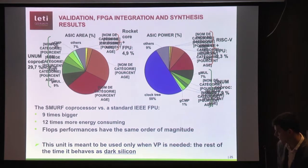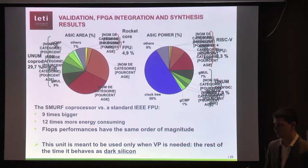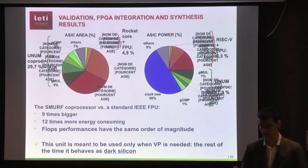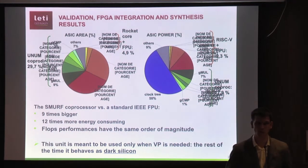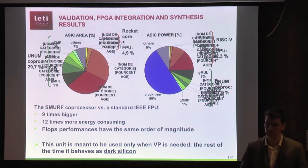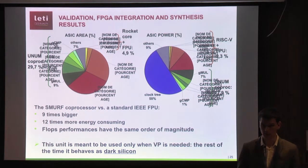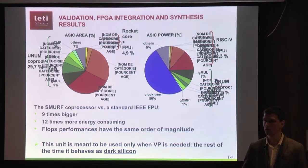We want to highlight that our coprocessor is not meant to substitute standard floating-point units, because standard floating-point units for lower precision work really well and are very optimized in energy consumption. We plan to use our coprocessor only when needed — when we want to do high-precision computation, we use UNUMs. For all the times we don't need variable precision, this circuit behaves as dark silicon, so we consume power only when variable precision is actually required.